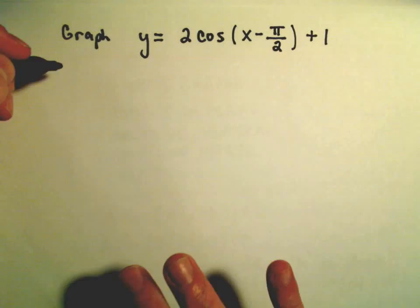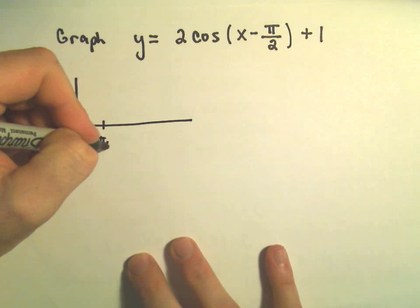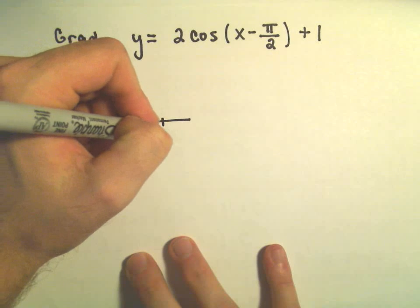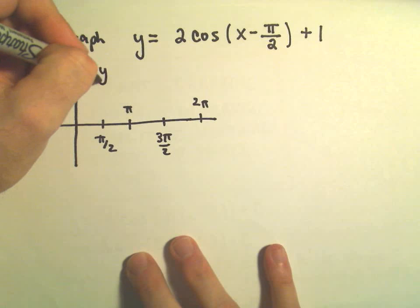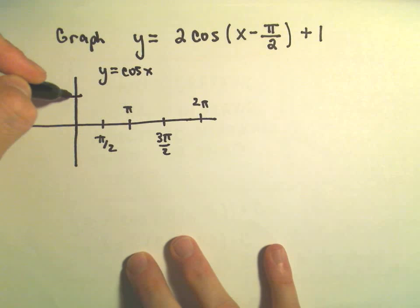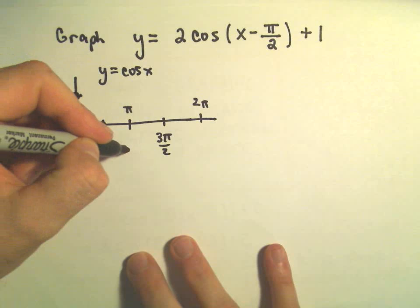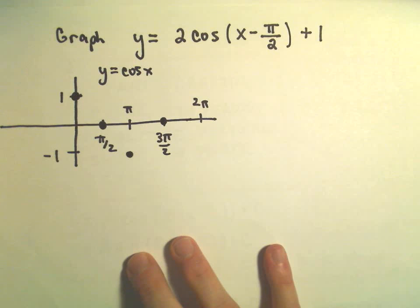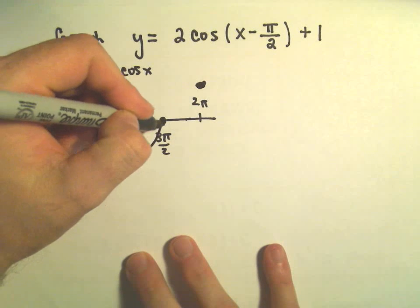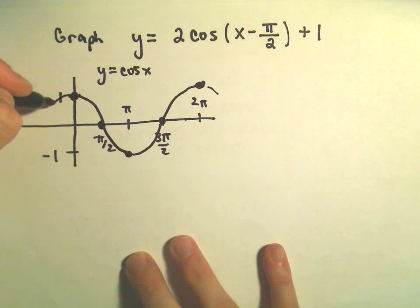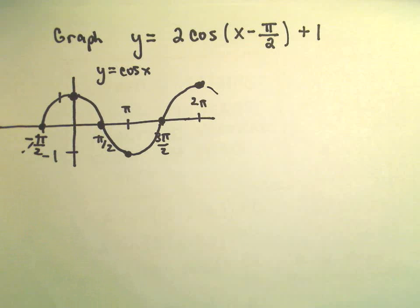The first thing I think about is what's the graph of just cosine x. This is going to be a pretty rough sketch here. I'll mark pi over 2, pi, 3 pi over 2, and 2 pi. So I'm going to graph y equals cosine x first. Cosine of 0 is 1, cosine of pi over 2 is 0, cosine of pi is negative 1, and then at 3 pi over 2 we're back at 0, and at 2 pi we're back at positive 1. We can even put a 0 over here at negative pi over 2. Okay, so there's the graph of cosine x.